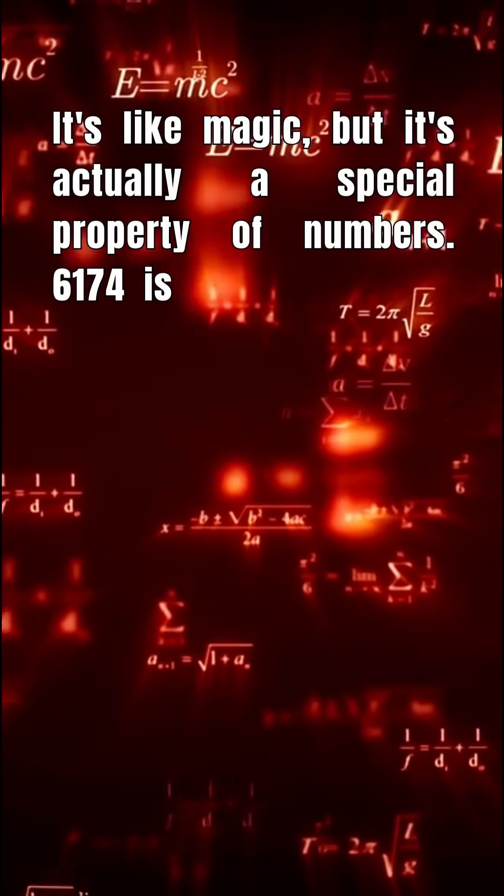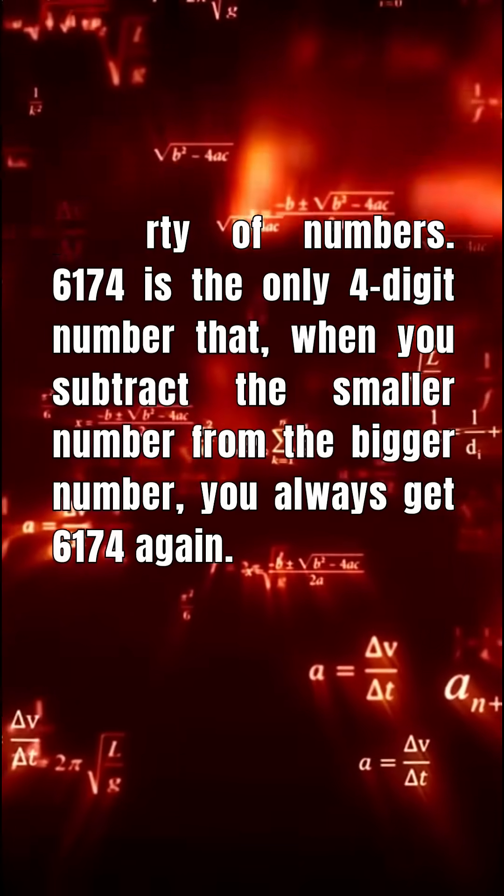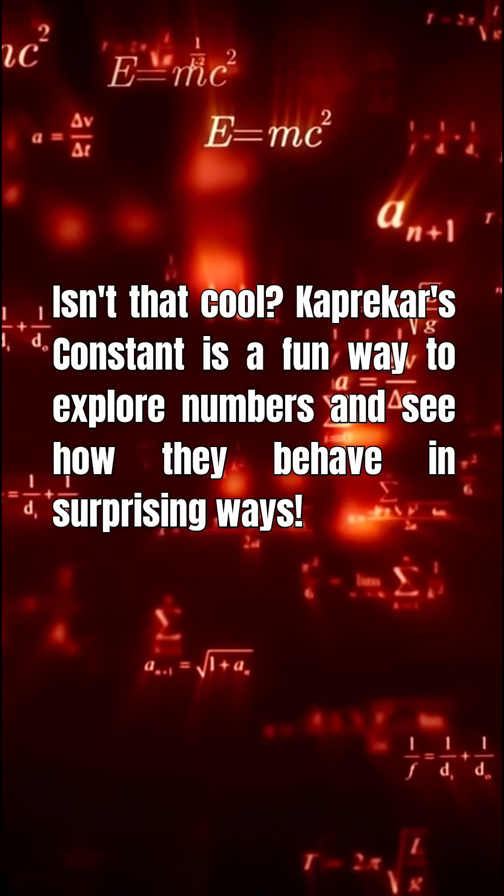It's like magic, but it's actually a special property of numbers. 6174 is the only 4 digit number that, when you subtract the smaller number from the bigger number, you always get 6174 again. Isn't that cool? Kaprekar's constant is a fun way to explore numbers and see how they behave in surprising ways.